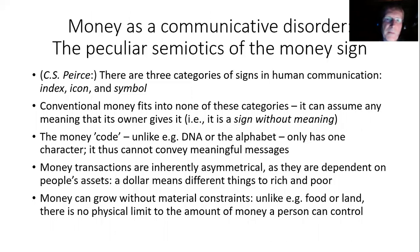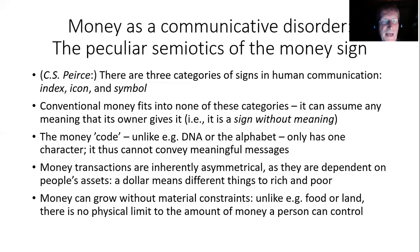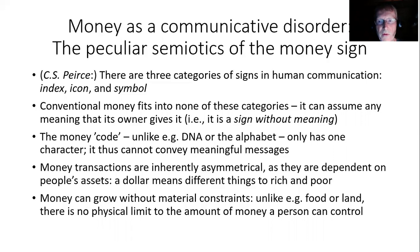You could argue that money is a communicative disorder. Money has a very peculiar property if you think of it as a sign. Semiotics is the study of signs, and Charles Sanders Peirce, the father of semiotics, distinguished between three categories of signs in human communication: the index, the icon, and the symbol. Conventional money doesn't fit into any of these categories — it can assume any meaning that its owner gives it. In other words, it's a sign without meaning.